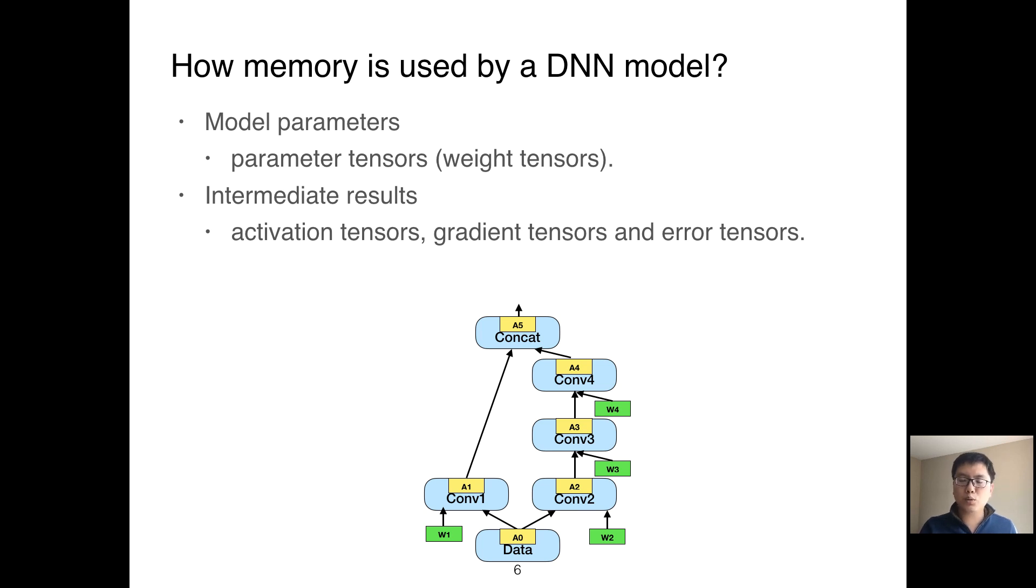For intermediate results, when they are created, we only need to make sure there is enough memory to store the value. But they are required to be swapped to CPU memory before their occupied GPU memory can be reused by other tensors.